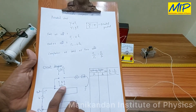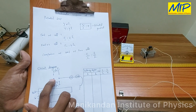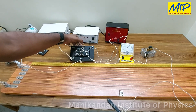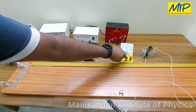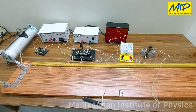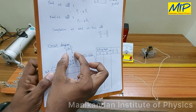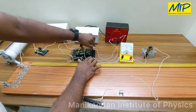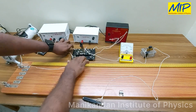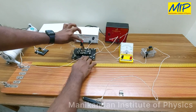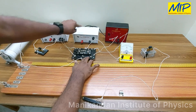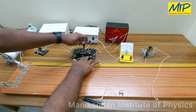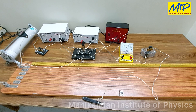The next connection is the DPDT switch. From point A, we connect the middle of the DPDT switch. From the other end of the middle point, it is connected with the galvanometer, high resistance, and the jockey. One end of the DPDT switch is connected with E1, and the other end is connected with E2. So one end of the DPDT switch is connected with the Leclanche cell and the other end with the Daniel cell. If I close the switch in one direction, the Daniel cell is connected; in the other direction, the Leclanche cell is connected.